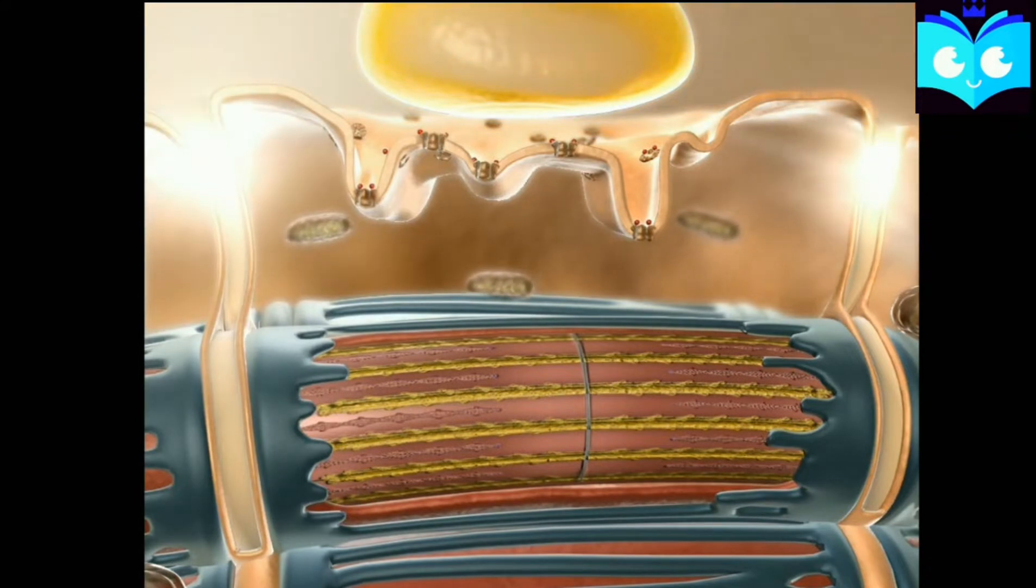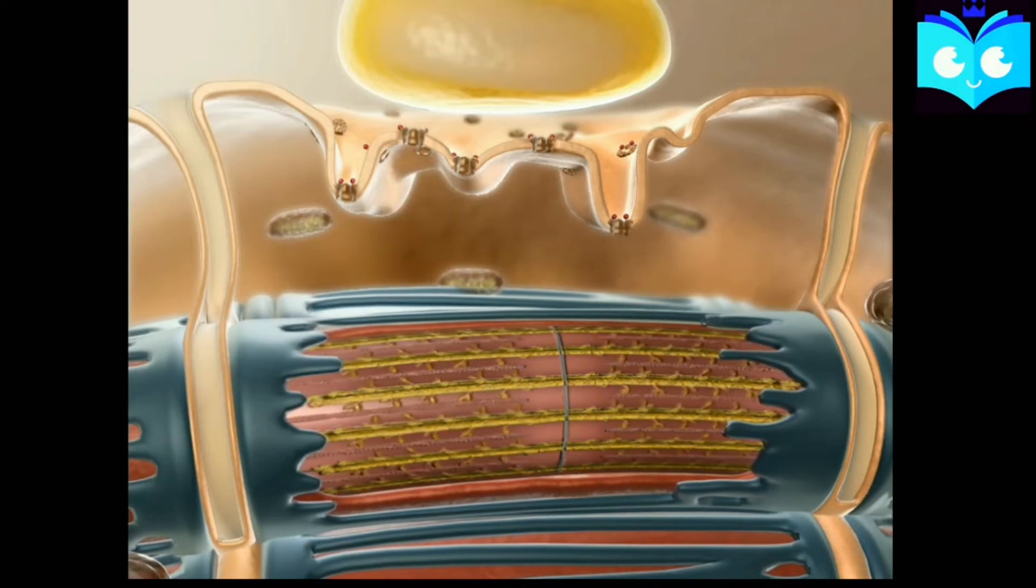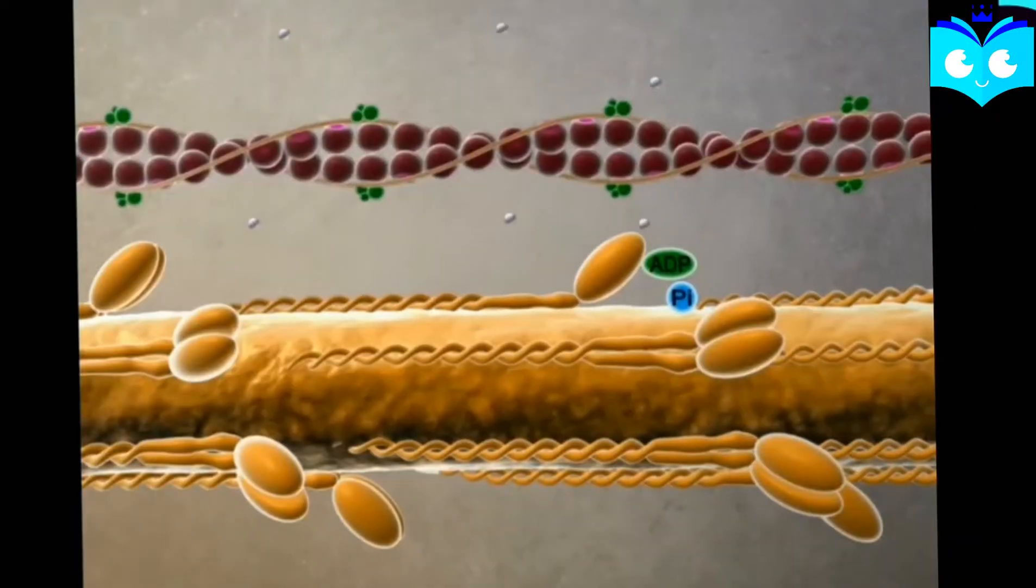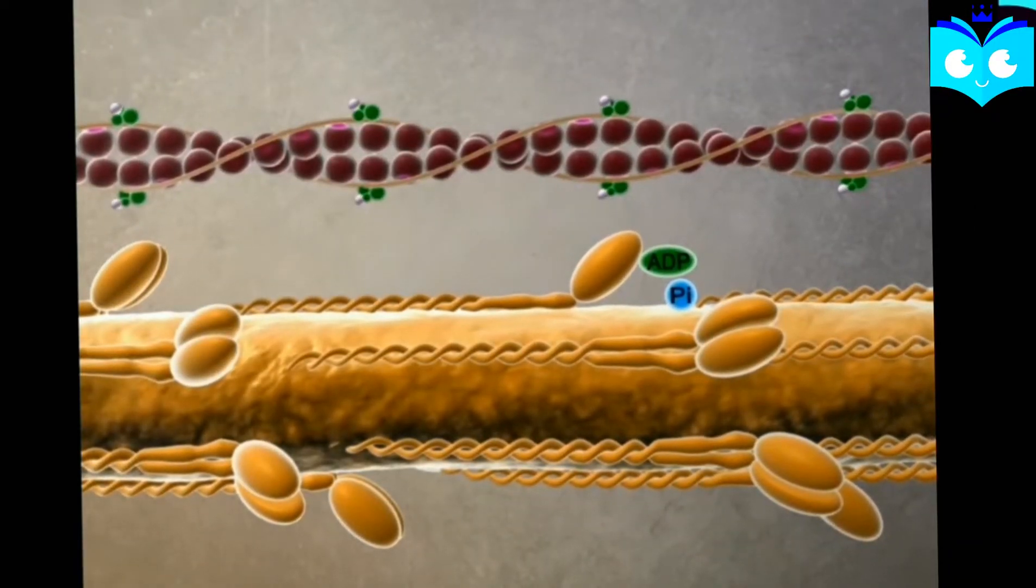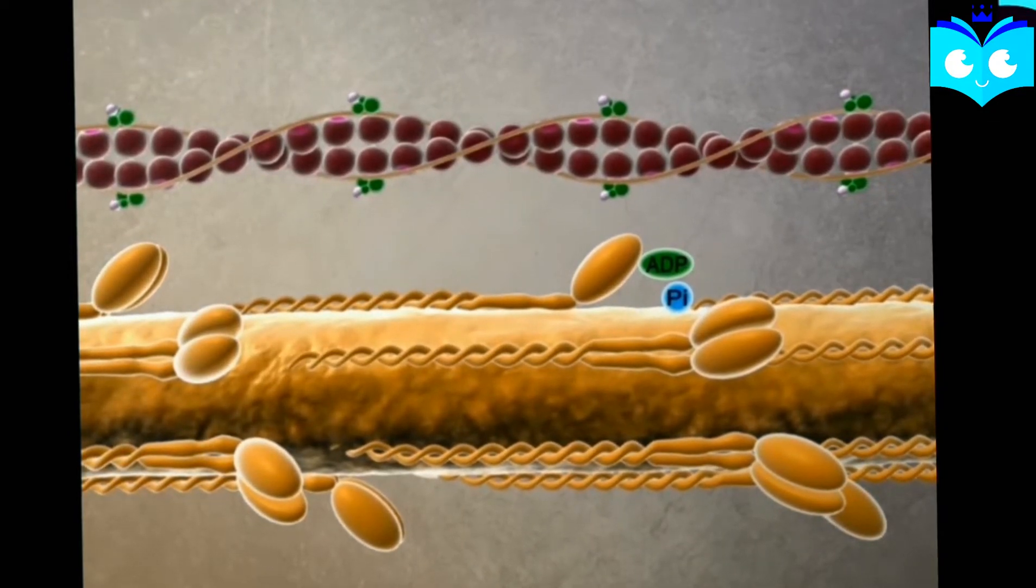Sarcoplasmic reticulum releases a huge amount of calcium ions. These calcium ions bind to the calcium binding site of troponin. As calcium binds to the troponin, tropomyosin moves away and exposes the myosin binding site to myosin.